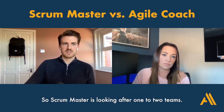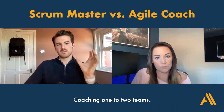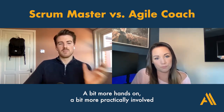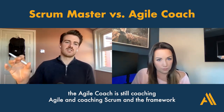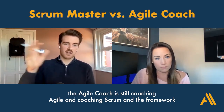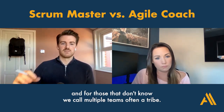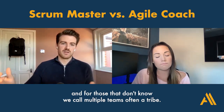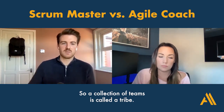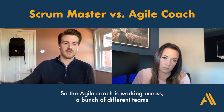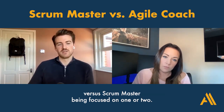So to summarise: a Scrum Master is looking after one to two teams and is a bit more hands-on, a bit more practically involved. The Agile Coach is still coaching Agile, coaching Scrum, and the framework, but across multiple teams — what we call a tribe. A collection of teams is called a tribe. So the Agile Coach works across a bunch of different teams versus a Scrum Master being focused on one or two.